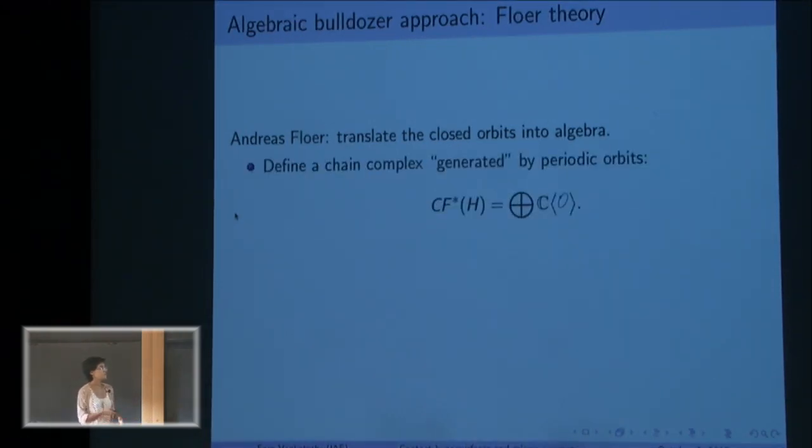He wanted to translate this question about closed orbits into algebra. So his approach was to define a chain complex generated by periodic orbits, so for every periodic orbit you get an extra copy of C into your chain complex.